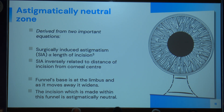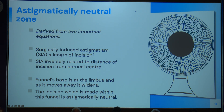The astigmatically neutral zone is a funnel shape with its base at the limbus, around 3 mm at the limbus, and widening as it moves away. This is the area where we should place the incision. If we are closer to the cornea, we have to be within this funnel for the least amount of astigmatism.